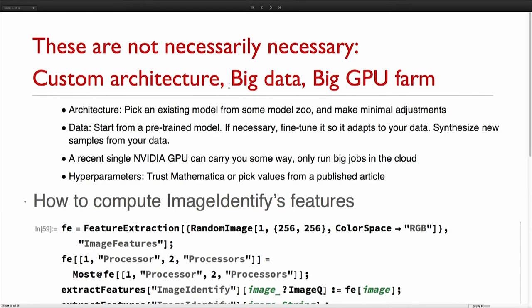In terms of data, you do need data. But if you don't have a lot, what you should do is start from a pre-trained model and just make a little change to it based on your data. Start from Image Identify and you give new training data and you change it a bit so it works for your data. You can also synthesize new samples. If you have one computer with a good single NVIDIA GPU, you can do a lot already. And if at some point you need more, you can go for the big job somewhere.